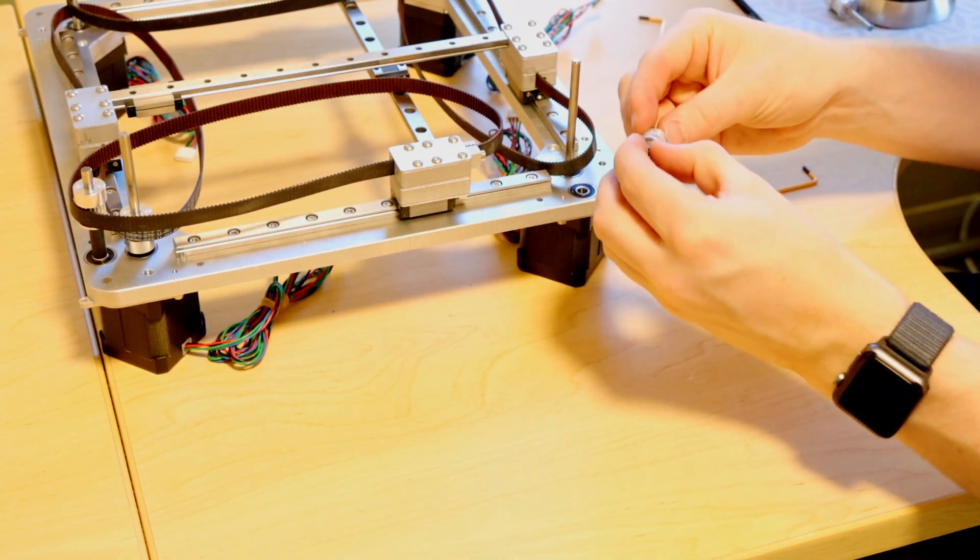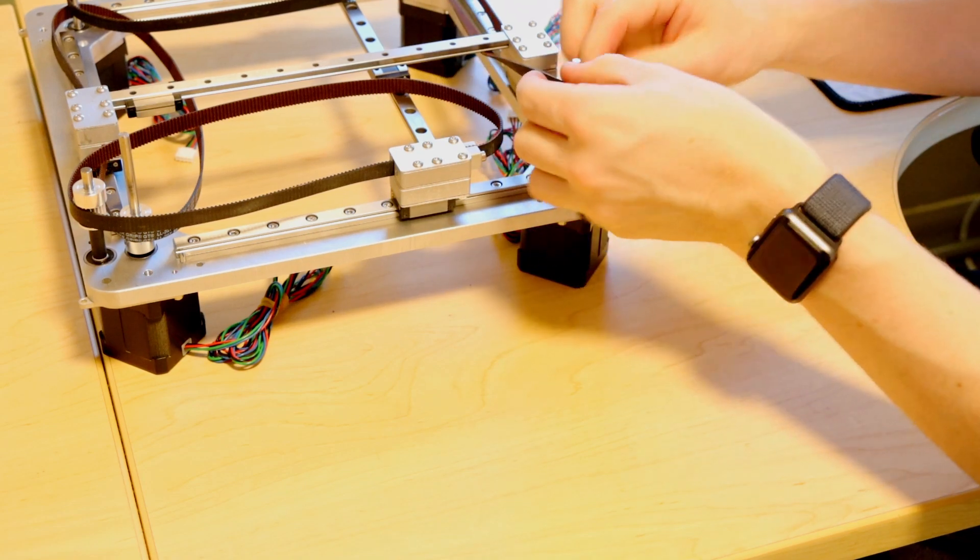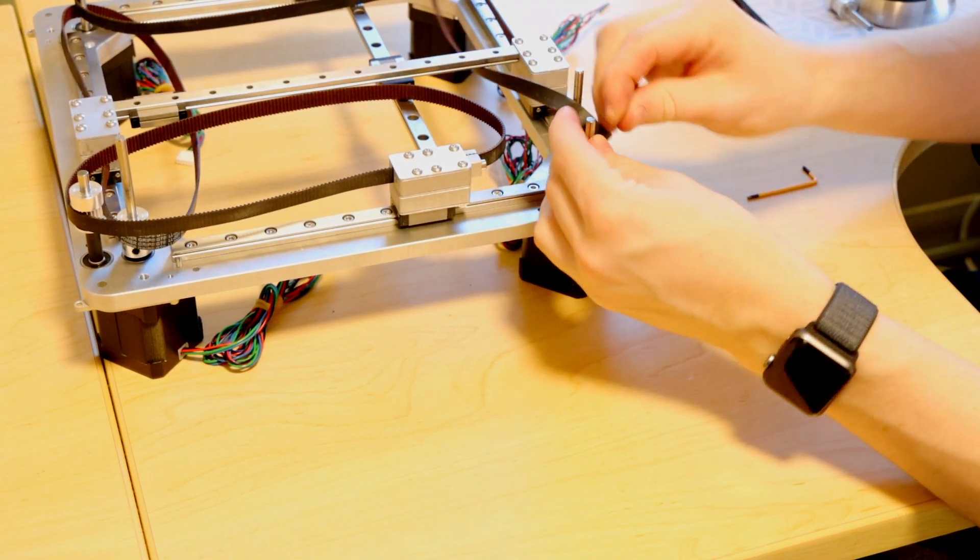In this corner we use two washers on the live idler and the belt will then go around this pulley.